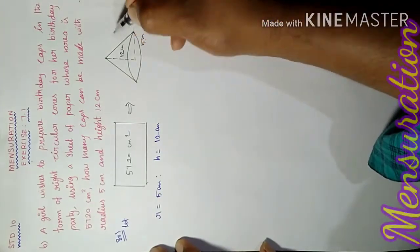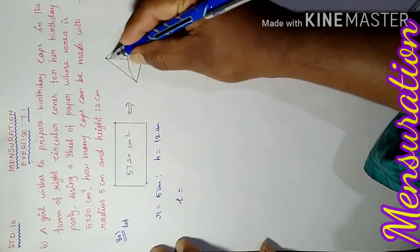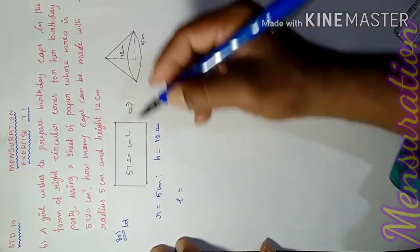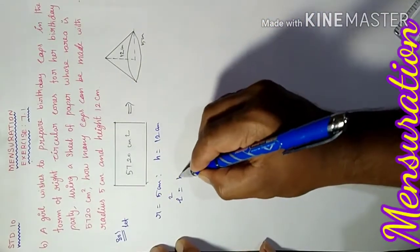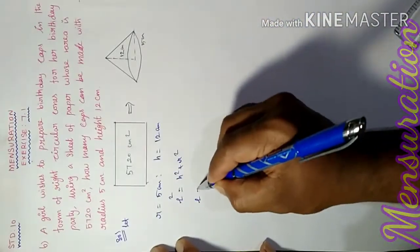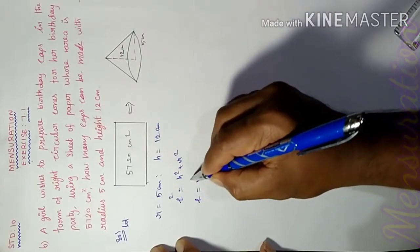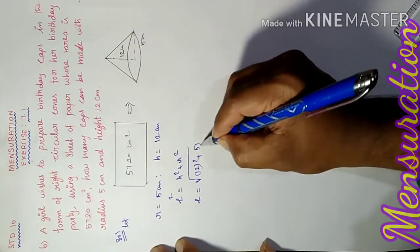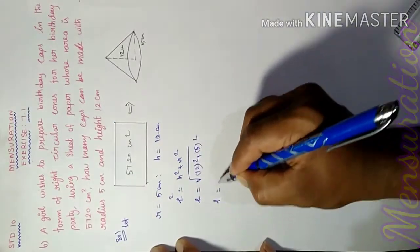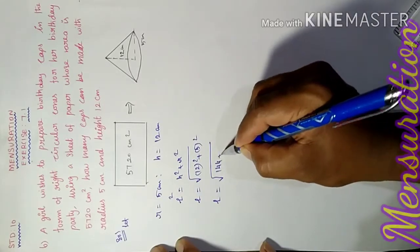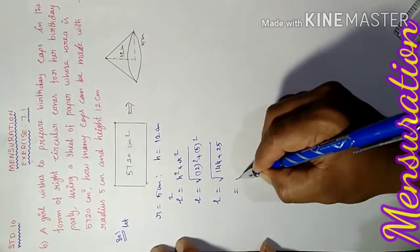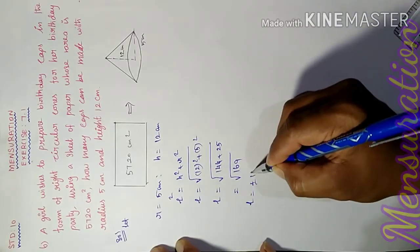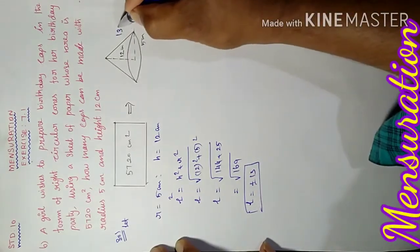To find the slant height L, we use the Pythagorean theorem: L² = H² + R². Therefore, L² = 12² + 5² = 144 + 25 = 169. Taking the square root: L = √169 = 13 cm.